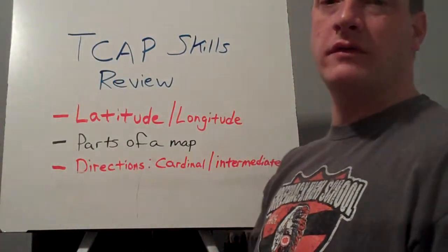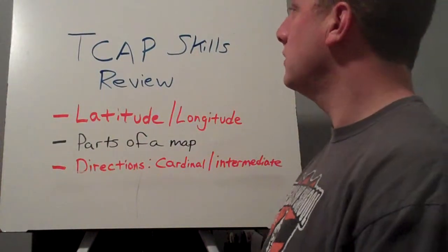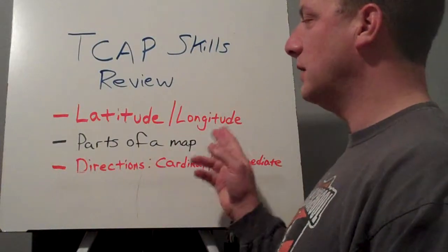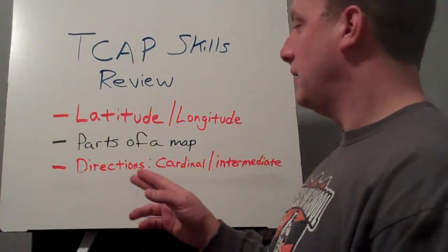Okay, in this lesson we're going to do a quick review. This will be a short one. We're going to do a quick review for TCAP skills. I want to talk about latitude, longitude, parts of a map, and also directions—cardinal and intermediate.